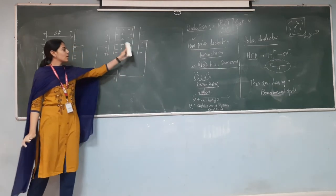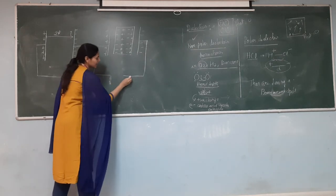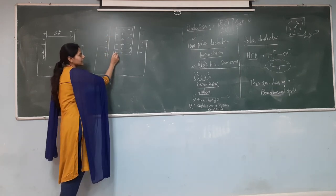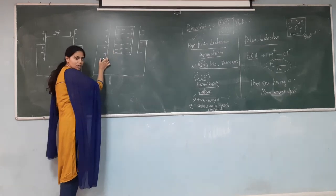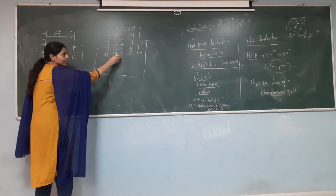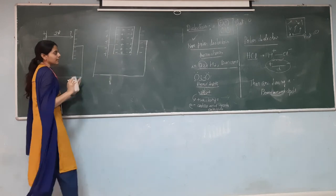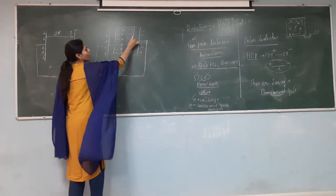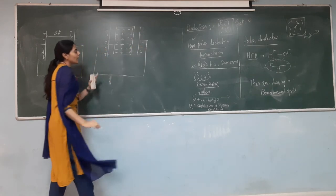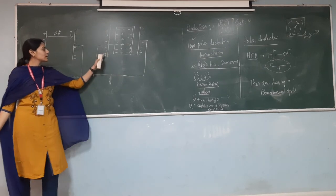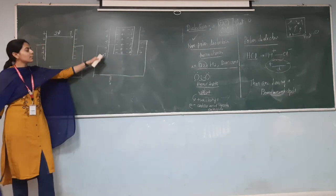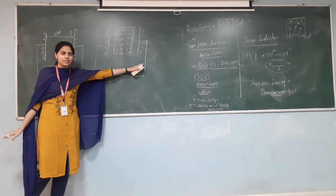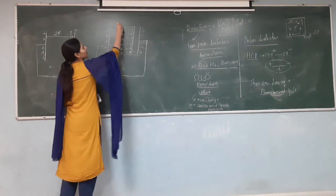Once this alignment is complete and the battery is removed, the negatives of the dielectric neutralize the positive charges on the capacitor plates, while the positives of the dielectric neutralize the negative charges on the other plate. This neutralization reduces the number of accumulated charges on the plates, which means the voltage is reduced.